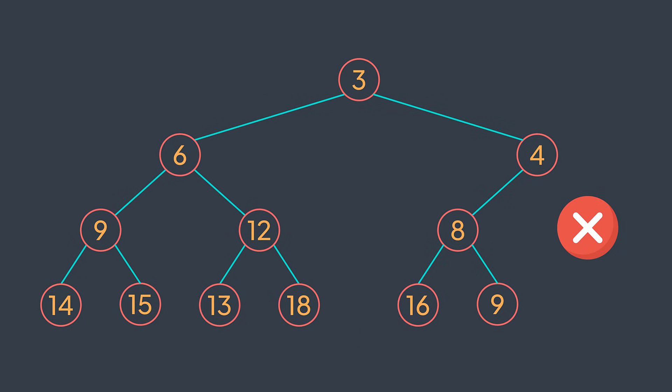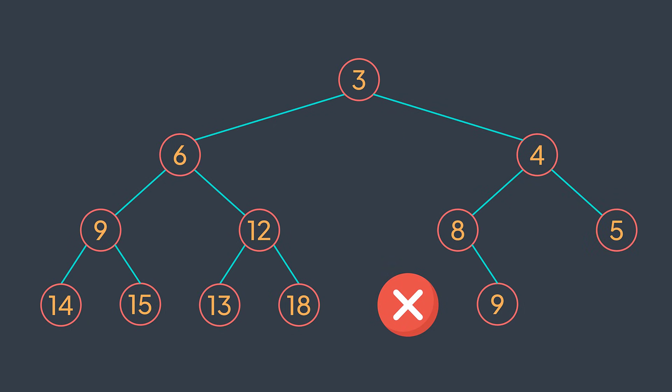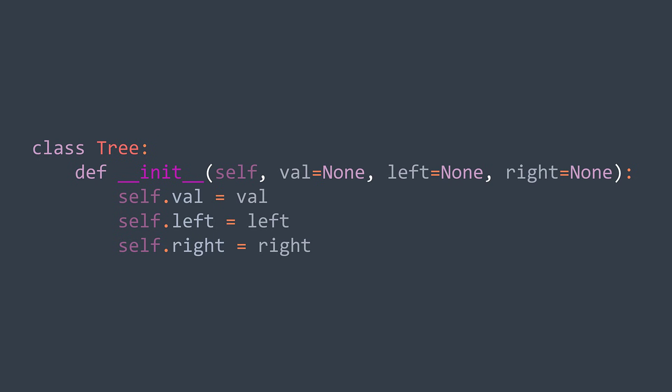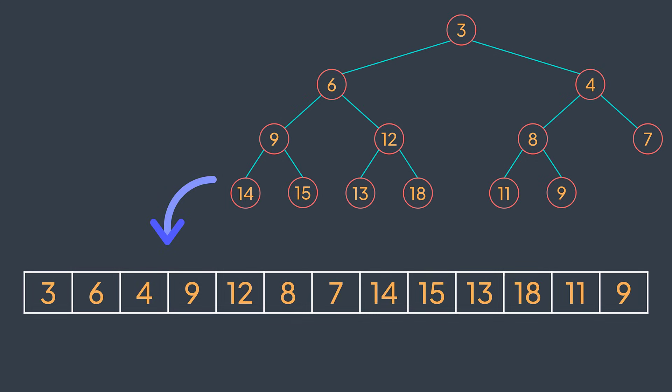So we can neither have a null value in a non-last level, nor a null value before a node in the last level. To store a binary tree, we usually have a tree class or something like that. But when the binary tree is complete, like for the binary heap, we can just store it in an array, which is more efficient. Why? Because when a binary tree is complete, we have no problem finding the related nodes when we store it in an array.